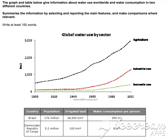With a population of 176 million, the figures for Brazil indicate how high agricultural water consumption can be in some countries.